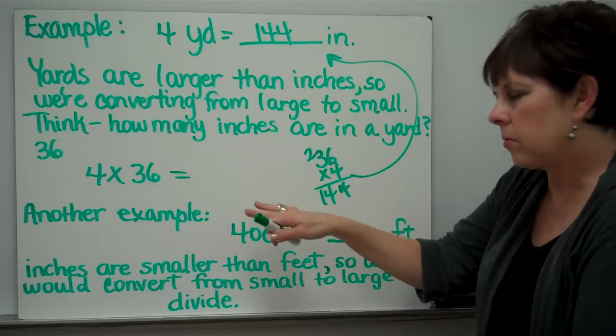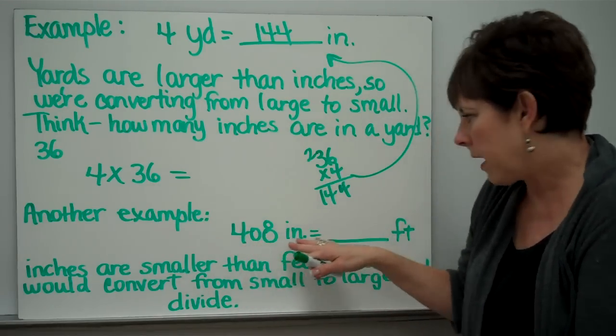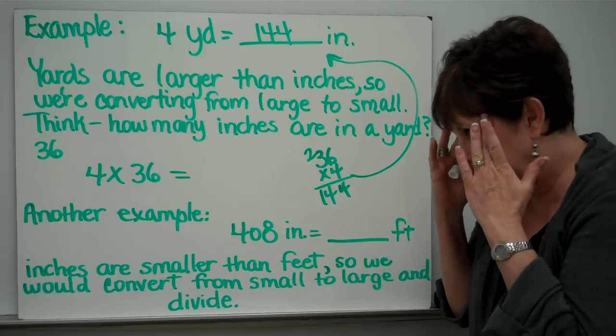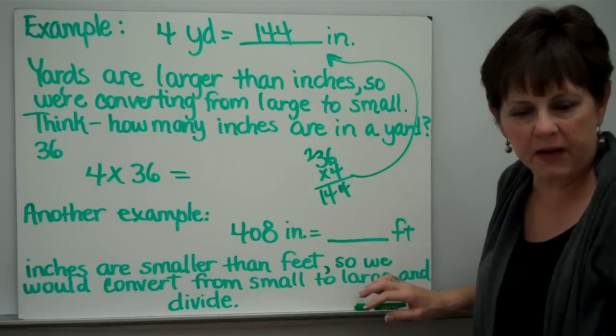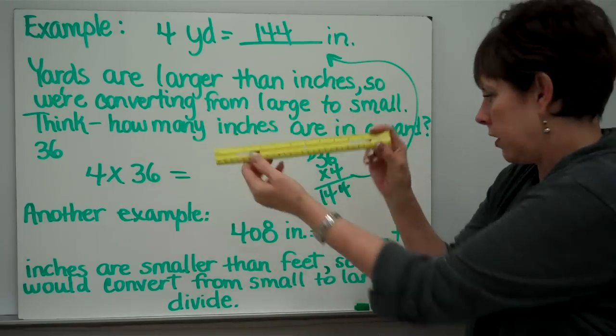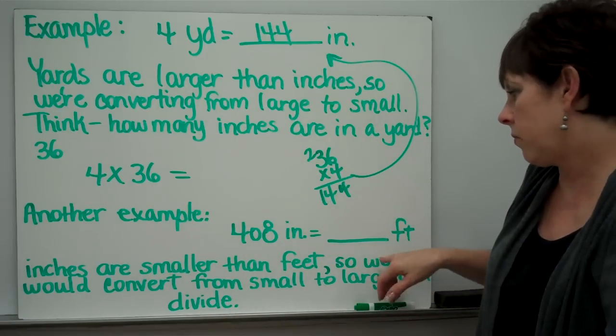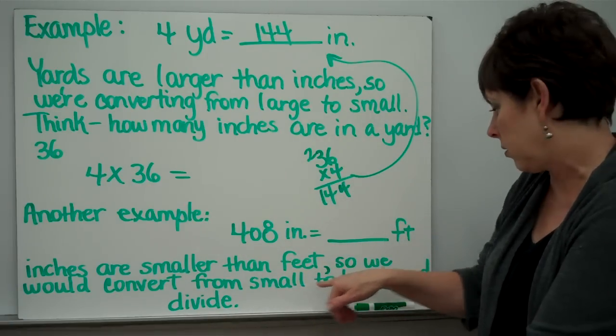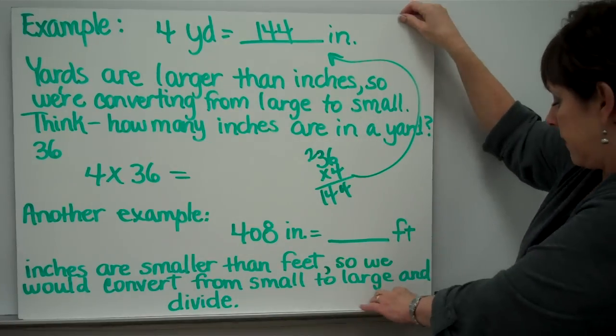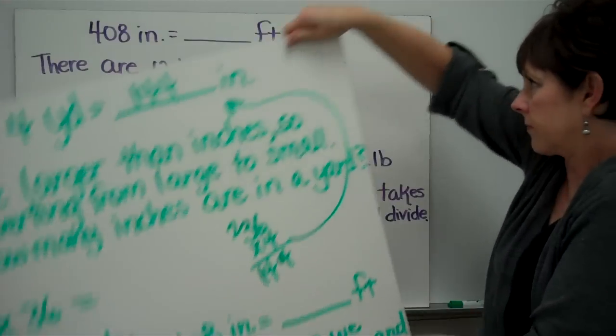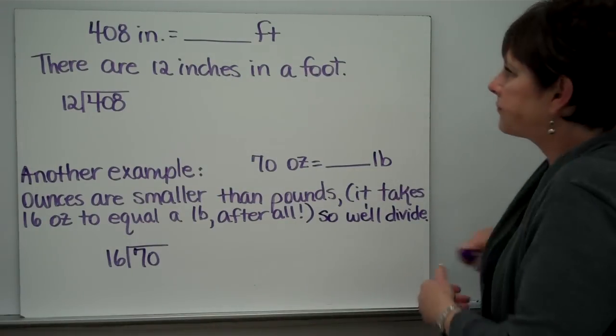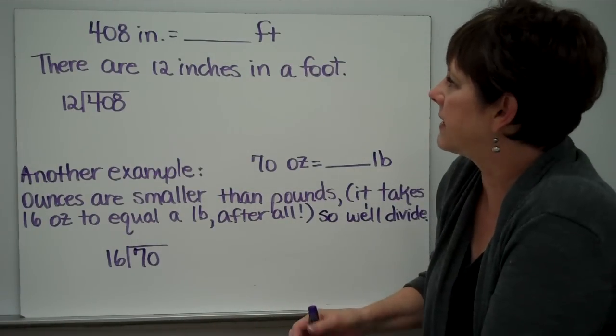Another example. 408 inches equals blank feet. Well, let's think. Inches are smaller than feet. Here is an inch, and here is a foot. So we are going to go from small to large, and we would divide, because inches are smaller than feet. 408 inches is how many feet?